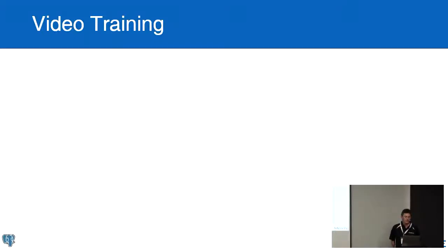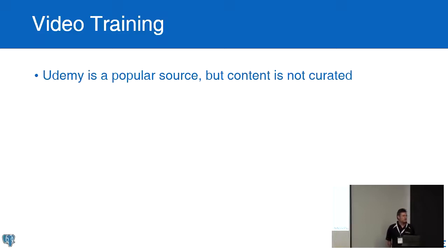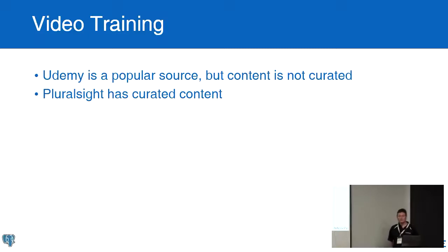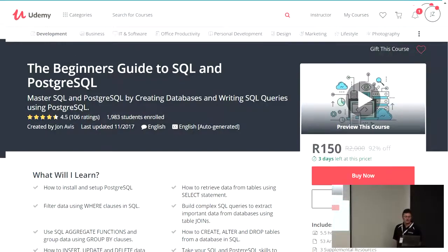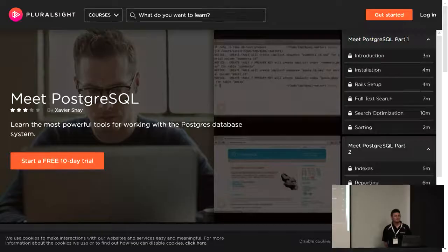Video training — what's available? Udemy. There's quite a lot of Postgres stuff on Udemy. Udemy content is not curated, so people don't check up on it and make sure it's of the right quality. But we have never been disappointed on Udemy — you do your homework and check feedback from other people, and generally it's quite good. Pluralsight — Malcolm told me about it at the user group. They have curated content with a bit of quality control. These are examples of the Udemy courses: Beginner's Guide, and there's more than one of them.